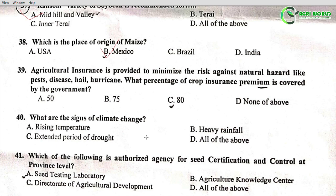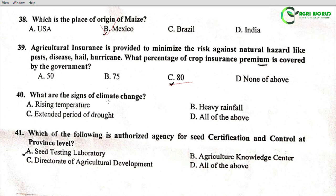Question 40: What are the signs of climate change? Options: Rising temperature, heavy rainfall, extended period of drought, or all of the above. The correct answer is all of the above.